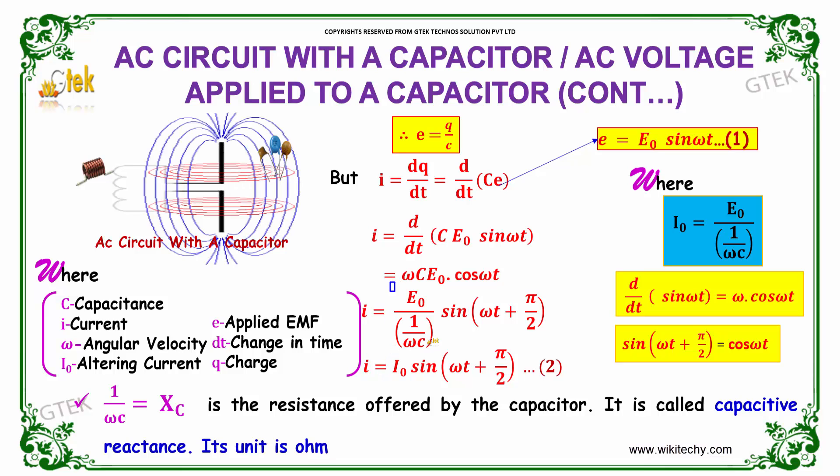As indicated, E0 by 1 by ωC can be replaced by I0 here. We got the final equation as I equals I0 sin(ωt + π/2), where 1 by ωC equals Xc, which is the resistance offered by the capacitor. This is referred to as capacitive reactance and its unit is ohm.